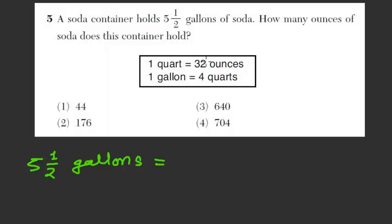But we have to get our final answer in ounces. So from gallons we have to go to quarts and from quarts we have to go to ounces. So 5.5, if you have learned mixed fractions, then it's 5 times 2 that is 10 and then this will get added. So it will be 11 over 2 gallons.